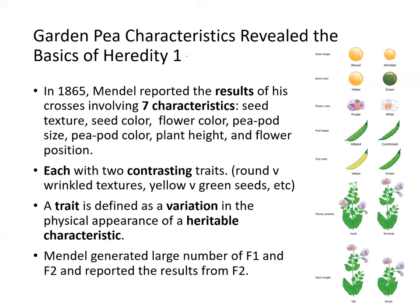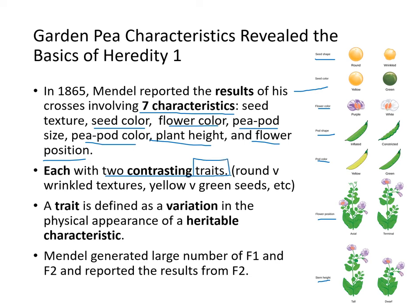In 1865, Mendel reported results of his crosses involving seven characteristics: seed texture or shape, seed color, flower color, peapod shape, peapod color, plant type, and flower position. Each of those characteristics has two contrasting traits — either round versus wrinkled texture, yellow versus green seeds, and so on. A trait is defined as a variation in the physical appearance of a heritable characteristic.